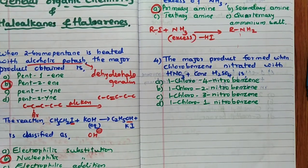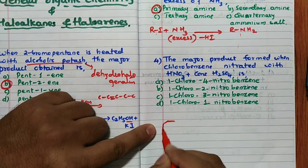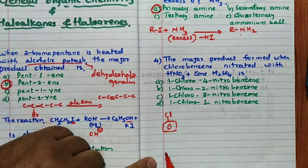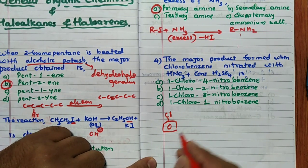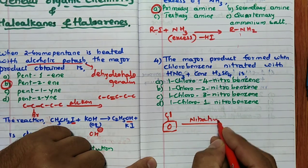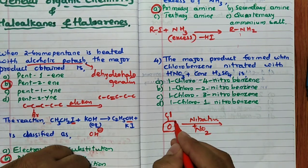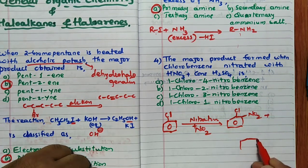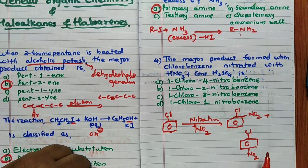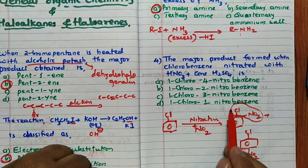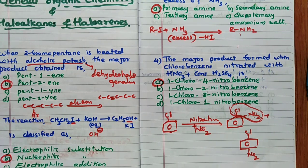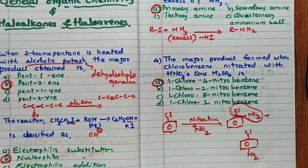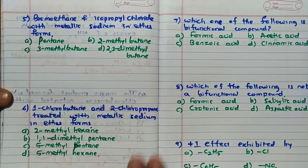Fourth question: major product when chlorobenzene is nitrated with HNO₃ and concentrated H₂SO₄. In nitration, NO₂⁺ is the electrophile. Chlorine exhibits both −I and +M effects, making it an ortho and para director. Both ortho-nitro and para-nitro products form, but para is the major product due to steric hindrance at the ortho position. The answer is 1-chloro-4-nitrobenzene.